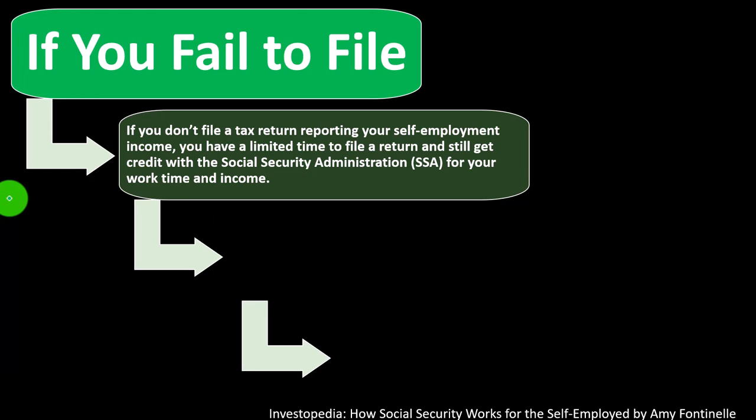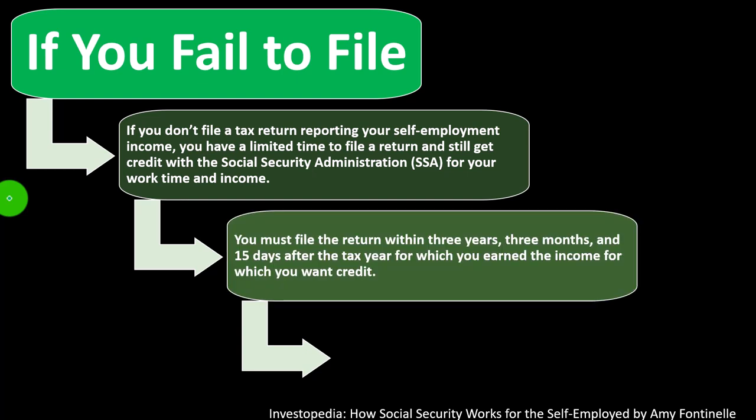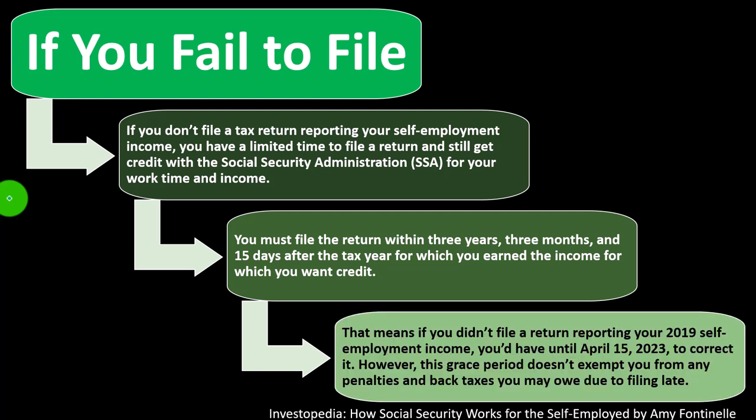If you fail to file — if you don't file a tax return reporting your self-employment income — you have a limited time to file and still get credit with the Social Security Administration for your work time and income. You must file the return within three years, three months, and 15 days after the tax year for which you earned the income. For example, if you didn't file a return reporting your 2019 self-employment income, you'd have until April 15, 2023 to correct it.